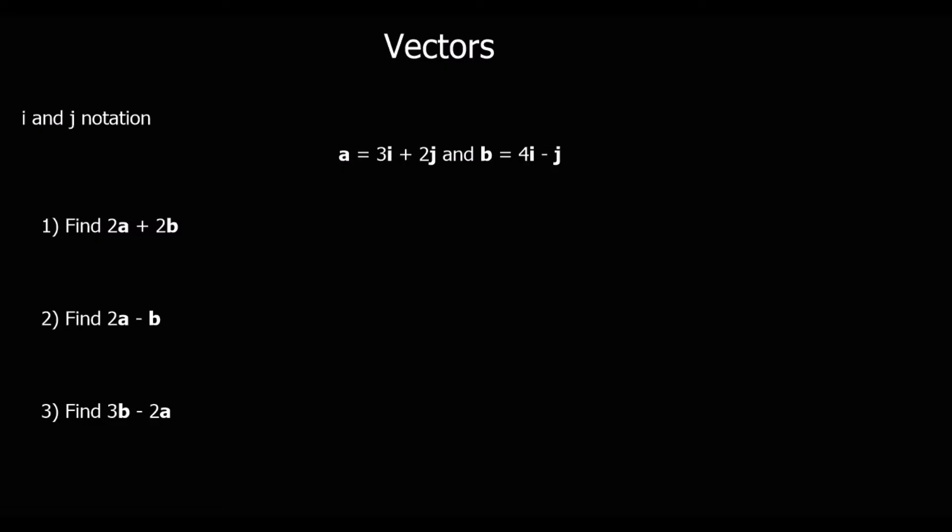In this video, we're going to look at using i and j notation. Here we've got two vectors: a, which we're saying is 3i plus 2j, and b, which is 4i minus j. Whenever we see an i, that's a movement in the x direction, and whenever we see a j, that's a movement in the y direction.